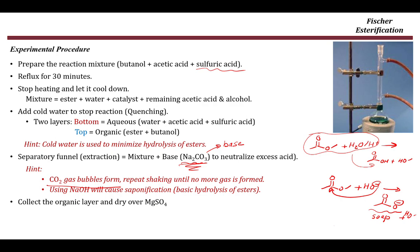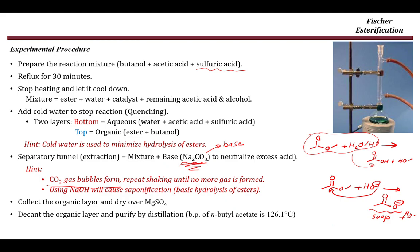We collect the organic layer — the top layer — and dry it over magnesium sulfate to remove excess water droplets. The organic layer is then decanted into a separate flask, and the compound is purified by distillation. The boiling point of n-butyl acetate is 126.1°C.